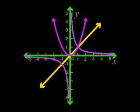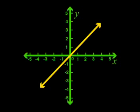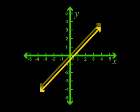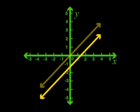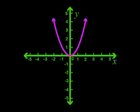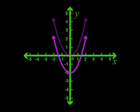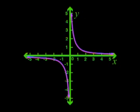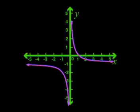If we change q to a negative number, each of the graphs moves down the y-axis. With q equal to negative 2, the straight line moves down 2 units, the parabola moves down 2 units, and the hyperbola moves down 2 units.